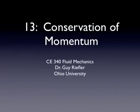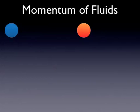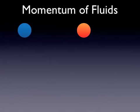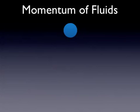Now that we've talked about control volumes and conservation of mass, let's move on to the other conservation equations. I'm going to start next with conservation of momentum. Now you've studied momentum and transfer of momentum in physics, so if you take pool balls and roll one into another, it might stop and then transfer its momentum to the other ball. So moving objects can transfer their momentum from one to another. It's the same with fluids,